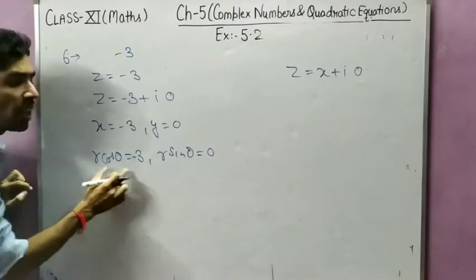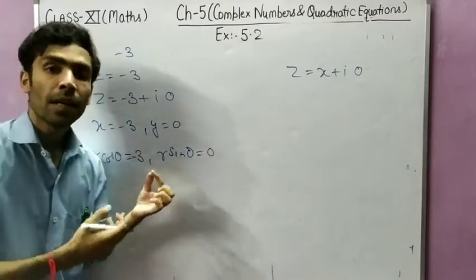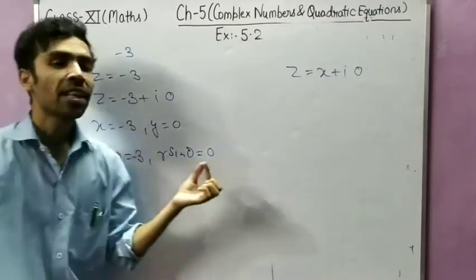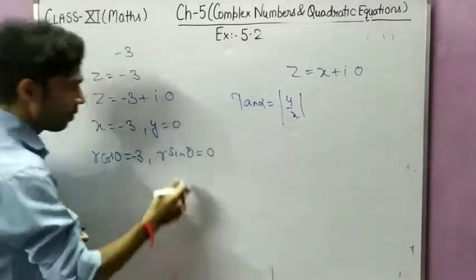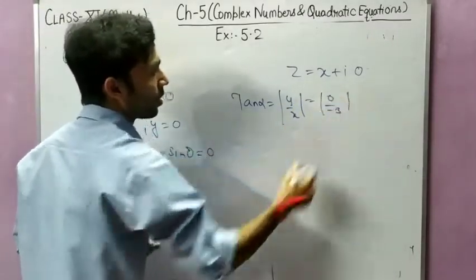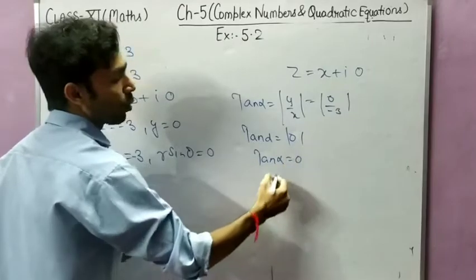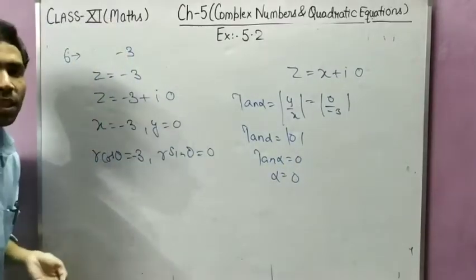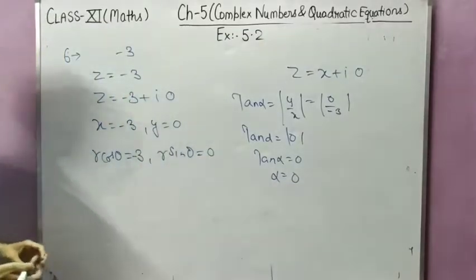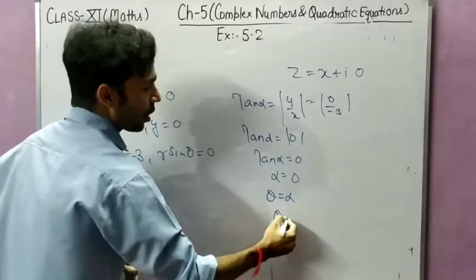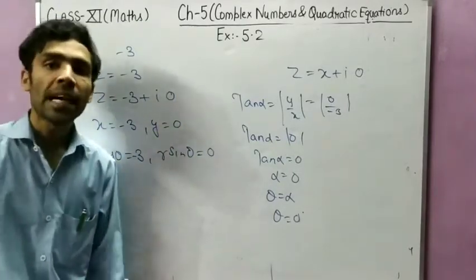We will do the squaring of r cos theta equal to minus 3 and r sin theta equal to 0, then add them to find r. For theta, tan alpha equals mod of y by x equals mod of 0 by minus 3, which equals 0. So tan alpha equals 0 and alpha equals 0 degree. Now we check the ordered pair to find the quadrant for the argument.